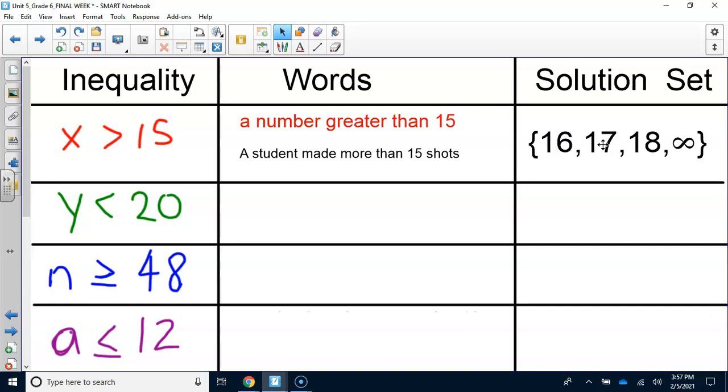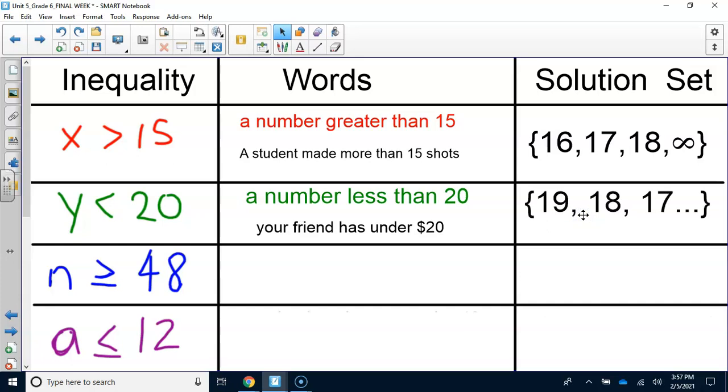Looking at the green inequality. This one is pointing to the left, and when we go left on a number line, we're getting less than. So this is a number less than 20. Think to yourself what a real-life example could be for numbers less than 20. In this case, it says your friend has under $20. But yes, this inequality is less than 20. What are the first three numbers that satisfy the solution set? Would 20 work? Well, is 20 less than 20? No. So the first three would be 19, 18, 17.